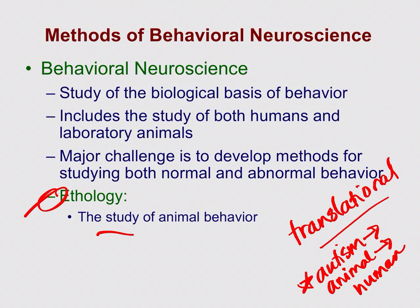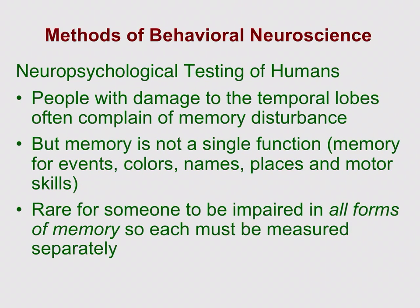We use ethology — the study of animal behavior — to understand aspects of human behavior we can't directly study. We create translational animal models because doing certain experiments on humans would be considered unethical, whereas doing them on animals — as long as we can provide meaningful answers about human behavior — is much more likely to pass ethical review. Animal models are brought in when we can't study something in humans experimentally.